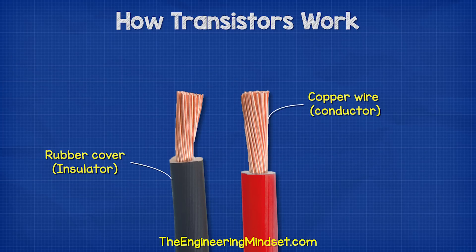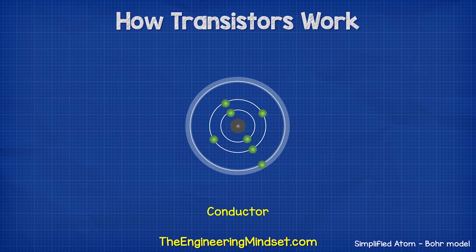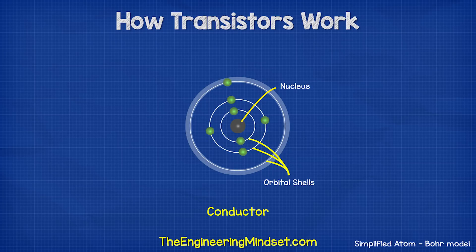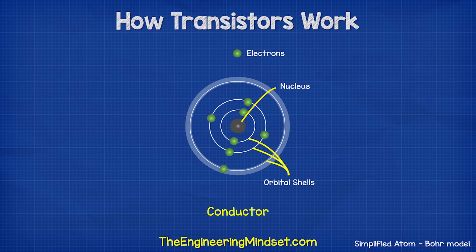The copper wire is the conductor and the rubber is the insulator. Electrons can flow easily through the copper, but they can't flow through the rubber insulator. If we look at a basic model of an atom of a metal conductor, we have the nucleus at the center, surrounded by a number of orbital shells which hold the electrons. Each shell holds a maximum number of electrons, and an electron needs to have a certain amount of energy to be accepted into each shell. The electrons located furthest away from the nucleus hold the most energy.